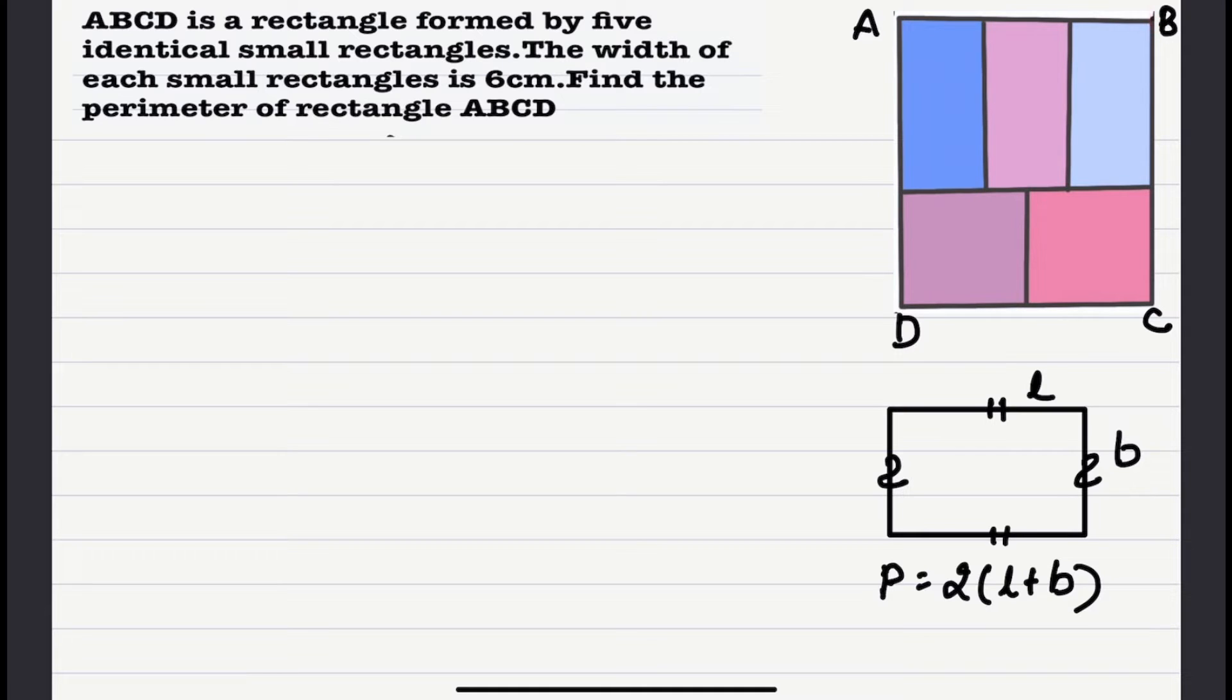Here we have to find out AB, BC, CD and DA. Now in order to find out AB, we see that the width of each rectangle here is six. Now this vertical rectangle, the width of each rectangle is six centimeters. So let us try to solve this question.